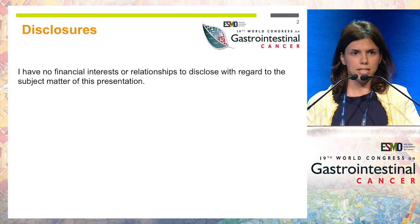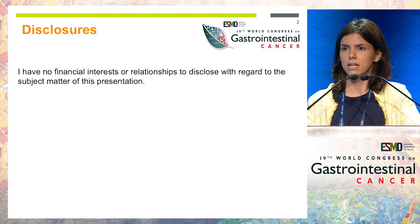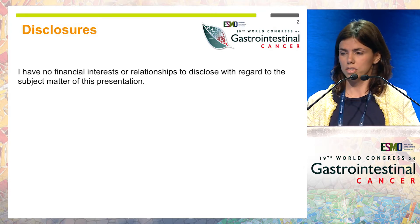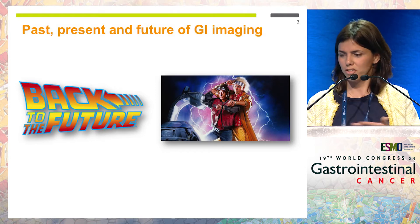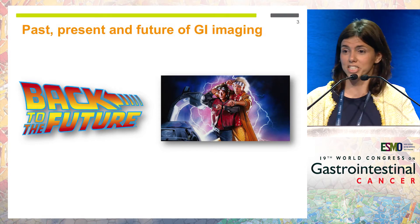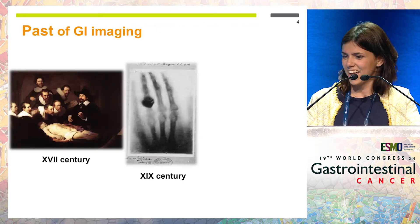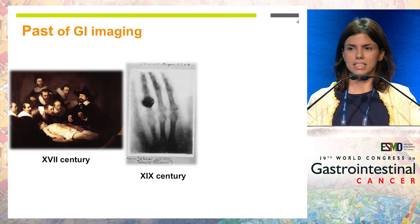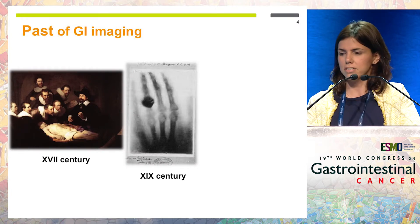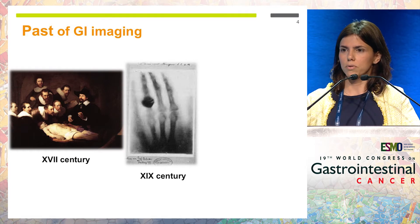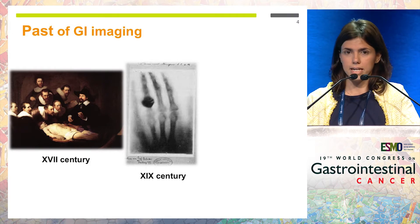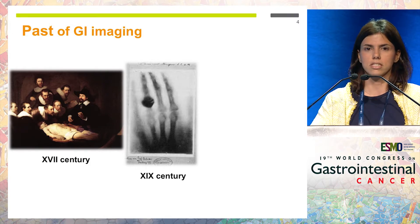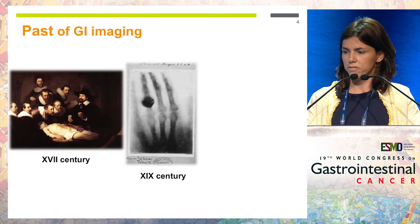In order to understand the future, it's always a good idea to go back to the origins. We are in the 17th century. We can imagine what a challenge it would be to understand what was happening inside a human body — the only way was actually to open it. It was not until 1895 when a physicist called Röntgen performed the first x-ray.